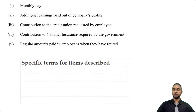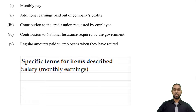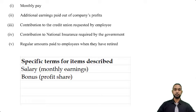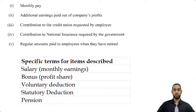For the first item, monthly pay — that's simply salary, monthly earnings, or monthly salary. Then additional earnings paid out of company profits — that's a bonus or profit share. The contribution to the credit union requested by the employee — that's a voluntary deduction. The contribution to national insurance required by the government is a statutory deduction. And regular amounts paid to employees when they have retired — that's the pension.